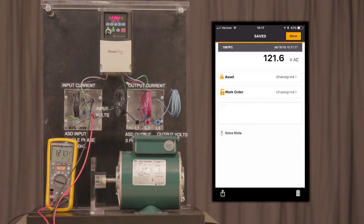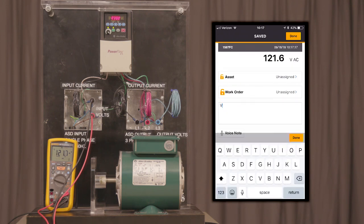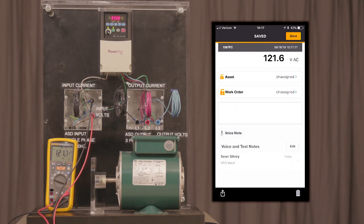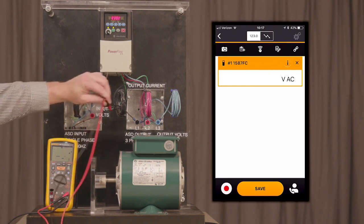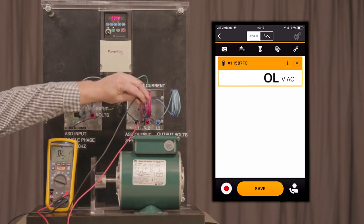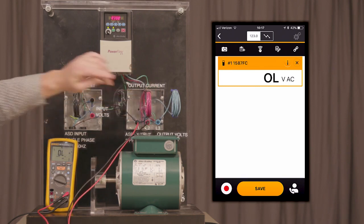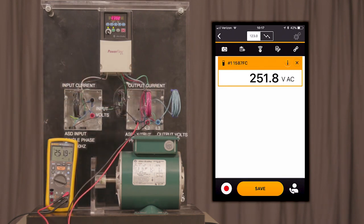We're going to save this measurement into our Fluke Connect app. So now that we've made that measurement and saved it, let's check the voltage of the output of our VFD. In this case, we're going to go from L1 to L2. As you can see here, the output voltage that we're reading is 251.